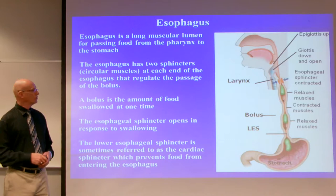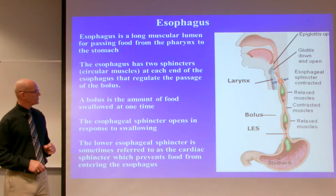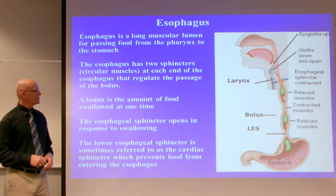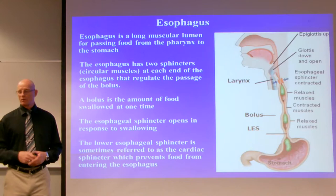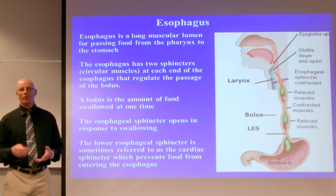The esophagus is a long muscular lumen for passing food in the form of a bolus from the pharynx to the stomach. It has two sphincters — circular muscles — one at the top (the esophageal sphincter) and one at the bottom before the stomach (the lower esophageal sphincter, sometimes called the cardiac sphincter), which helps prevent food from backing into the esophagus and causing gastroesophageal reflux and what we know as heartburn.